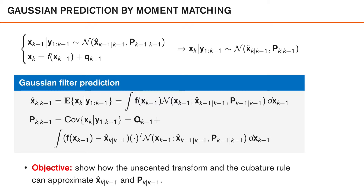Here is a description of how to perform Gaussian prediction by moment matching. We assume that the posterior from time k-1 is a Gaussian density with this mean and this covariance, and that the motion model can be described like this. So we have a nonlinear function of our previous state, plus some Gaussian noise. The goal in the prediction step is to compute the predicted mean x-hat k|k-1 and the predicted covariance P k|k-1. In order to compute the predicted mean, we take the expected value of x_k given y_1 to k-1, which is the same as taking the expected value of f(x_{k-1}), as q_{k-1} is zero mean.